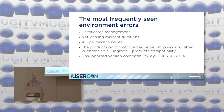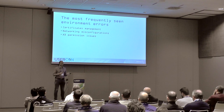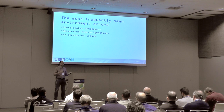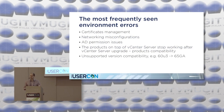AD permission issues are another common problem. When migrating from Windows vCenter Server to appliance, the appliance needs to rejoin the same Active Directory. The user performing migration might need a higher level of permissions to unjoin and rejoin AD — especially if the original AD join was done by a different user. So make sure your user has sufficient AD permissions before the migration.